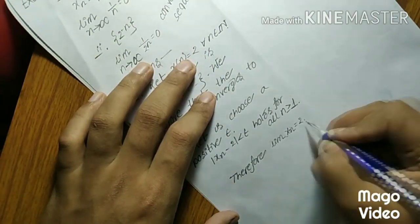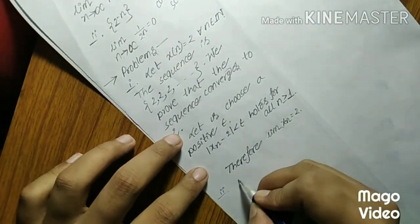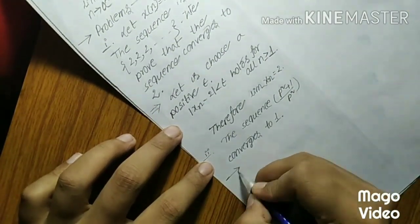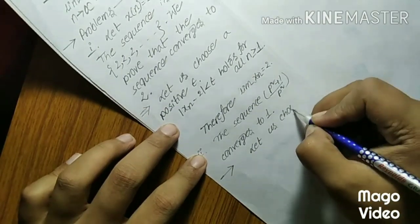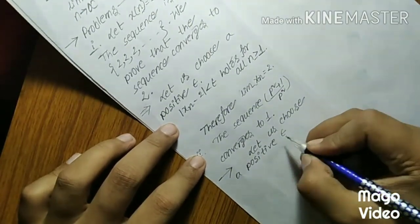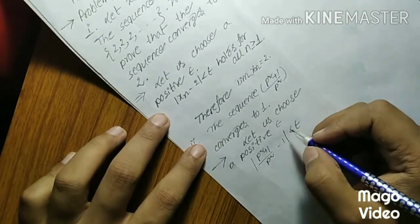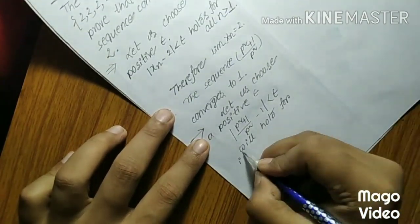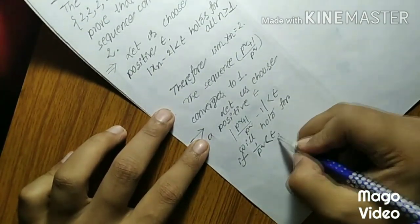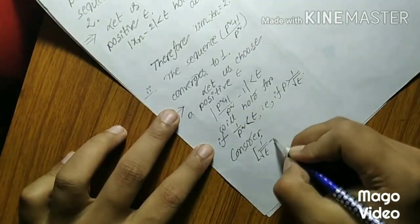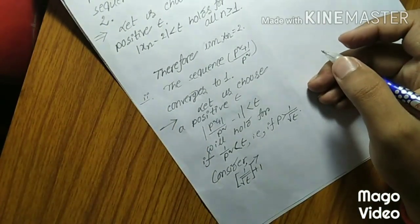Second problem, the sequence p square plus 1 upon p square converges to 1. Let us choose a positive epsilon. Mod of p square plus 1 upon p square minus 1 less than epsilon will hold for if 1 by p square less than epsilon, that is if p greater than equal to 1 by root epsilon.